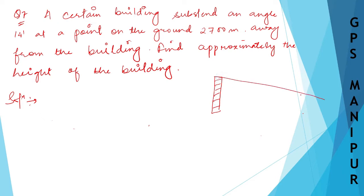At a point on the ground - so there is this point - it is 14 minutes. The distance from the building to a particular point on the ground is 2700 meters, and the angle is 14 minutes.